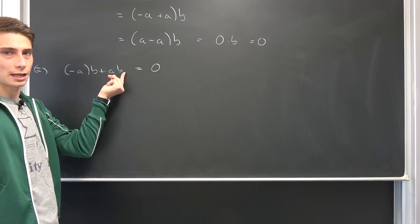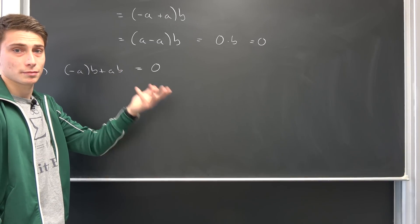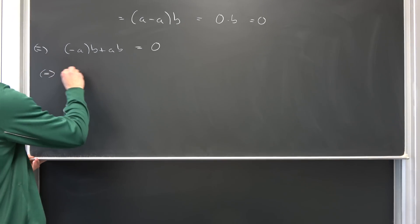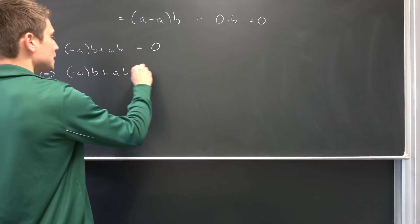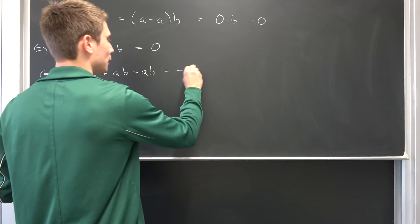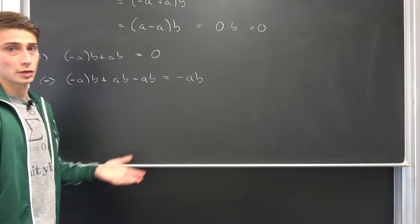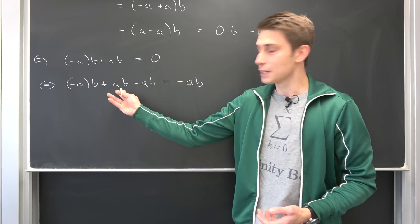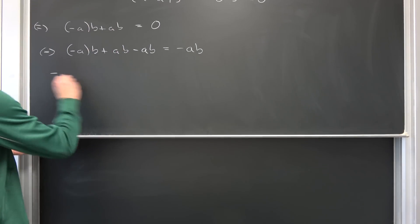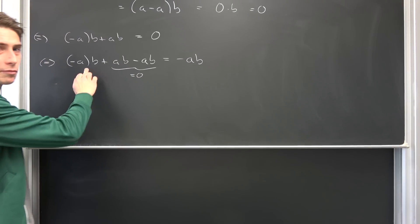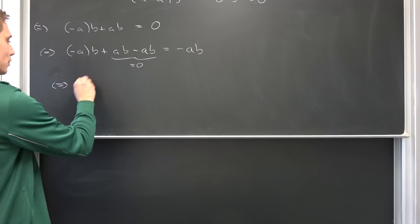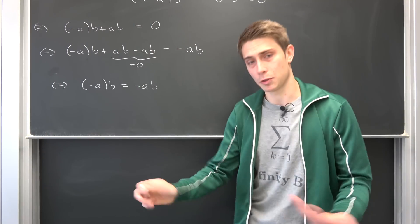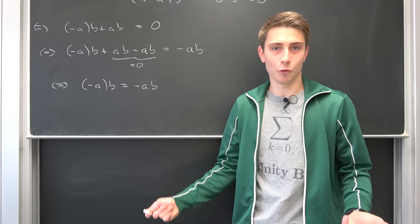By closure under multiplication, this is just an element of the field. So we can establish an additive inverse to A times B, just like before. That's equivalent to saying negative A times B plus A times B minus A times B equals negative A times B. We have the cancellation rule, which holds for all natural numbers, real numbers, etc. And you see, A times B minus A times B results in zero. Something plus zero is the something itself. So that's equivalent to saying negative A times B equals negative of A times B. It might seem obvious, but we have to prove these things rigorously.